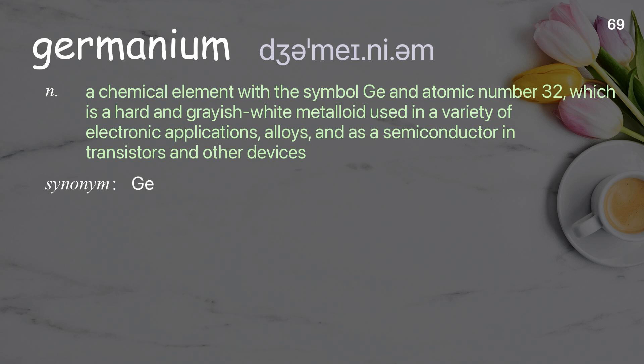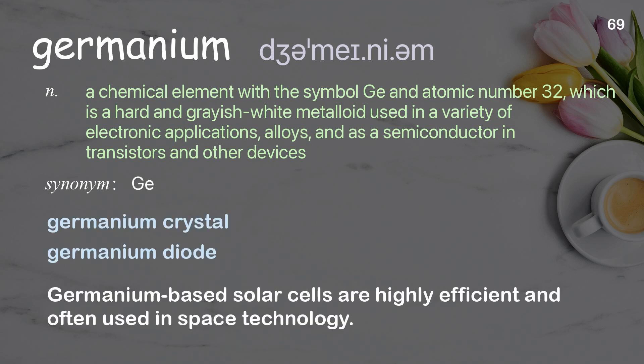Germanium. A chemical element with the symbol Ge and atomic number 32, which is a hard and grayish-white metalloid used in a variety of electronic applications, alloys, and as a semiconductor in transistors and other devices. Examples: Germanium crystal. Germanium diode. Germanium-based solar cells are highly efficient and often used in space technology.